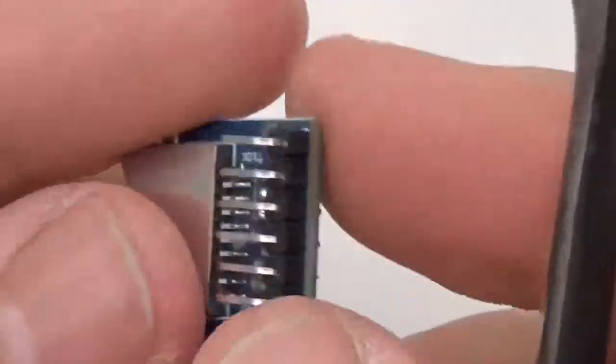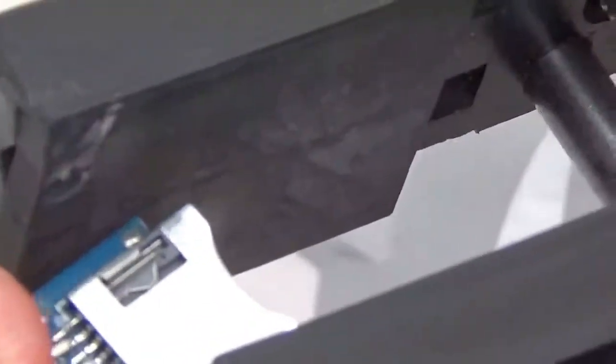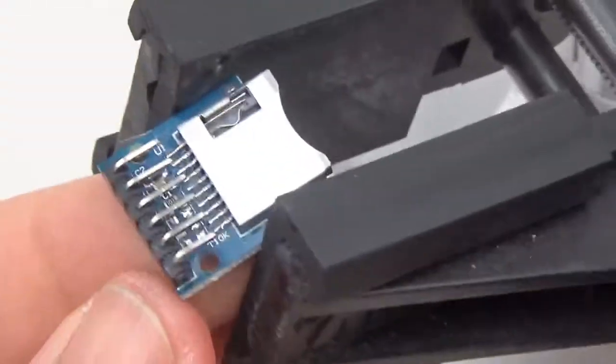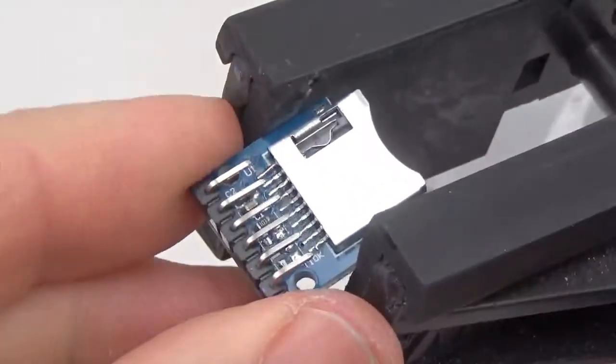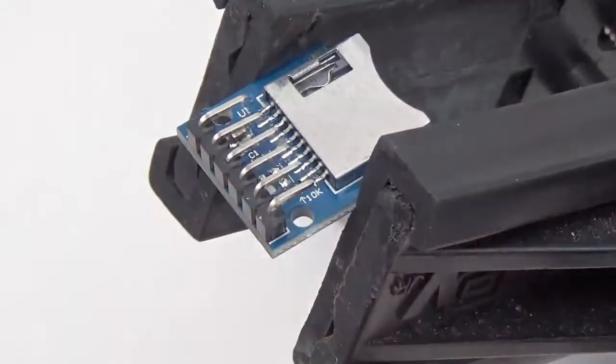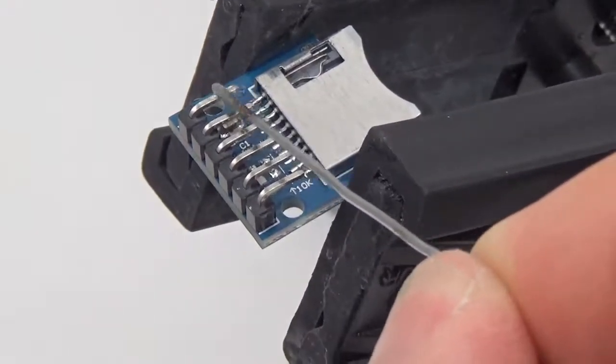You want these bent down at 90 degrees. We will tin them, so I'll throw them in a vise here. A little bit of flux on those pins—not too much. You always want to make sure you're not using too much flux.